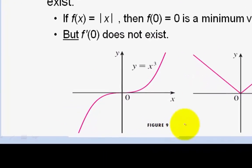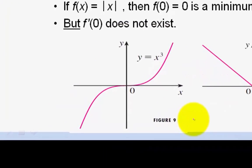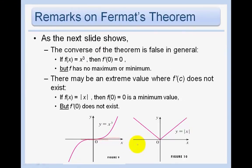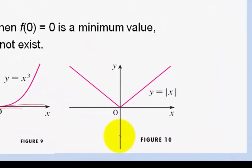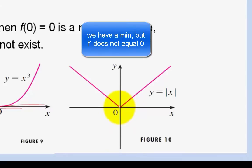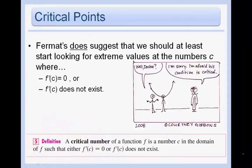This is shown clearly in figure 9: for y = x³, there is a horizontal tangent line at the origin, but there is neither a max nor a min there. There may also be extreme values where f′(c) does not exist. In figure 10, f(0) = 0 is a minimum value, but f′(0) does not exist — so we have a minimum where the derivative is not zero. This leads us to critical points, which is very important.